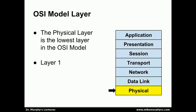The physical layer is at the lowest layer of the OSI model. This is layer 1 — the layer of the conceptual OSI model on which all the other layers are built. In practice, this is also the layer that contains the networking hardware. The remaining layers can be implemented as software layers on top of that hardware.